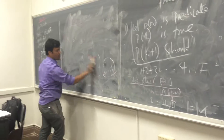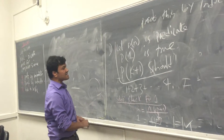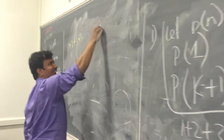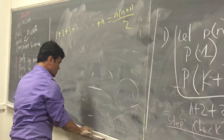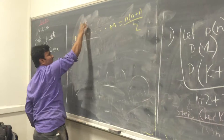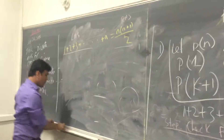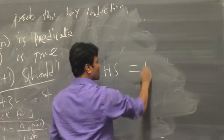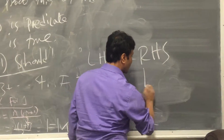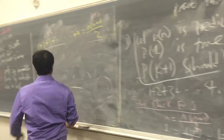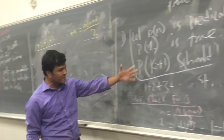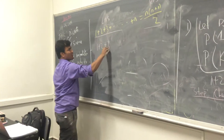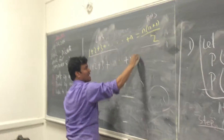Proof by induction has two parts. One part is the left-hand side and the other part is the right-hand side. So 1 plus 2 plus 3 plus dot dot dot plus n equals n times n plus 1 over 2. Now let's do it for k plus 1. We already plugged in 1 and it worked, so it should work for k plus 1. So the left-hand side is 1 plus 2 plus 3 plus dot dot dot plus k plus k plus 1.